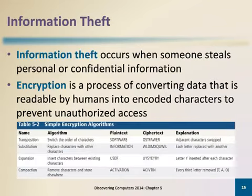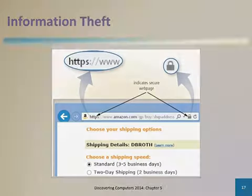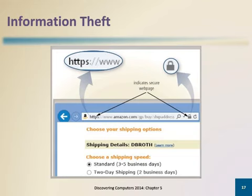Information theft occurs when someone steals personal or confidential information. Encryption safeguards against information theft. Encryption is the process of converting plain text, readable data, into ciphertext, unreadable characters. Digital signatures are often used to ensure that an imposter is not participating in an internet transaction. A digital signature is an encrypted code that a person, website, or organization attaches to an electronic message. A digital certificate is a notice that guarantees a website is legitimate. A secure site is a website that uses encryption to secure data. Web addresses of secure sites often begin with HTTPS instead of HTTP, and browsers often display a lock symbol in the window.